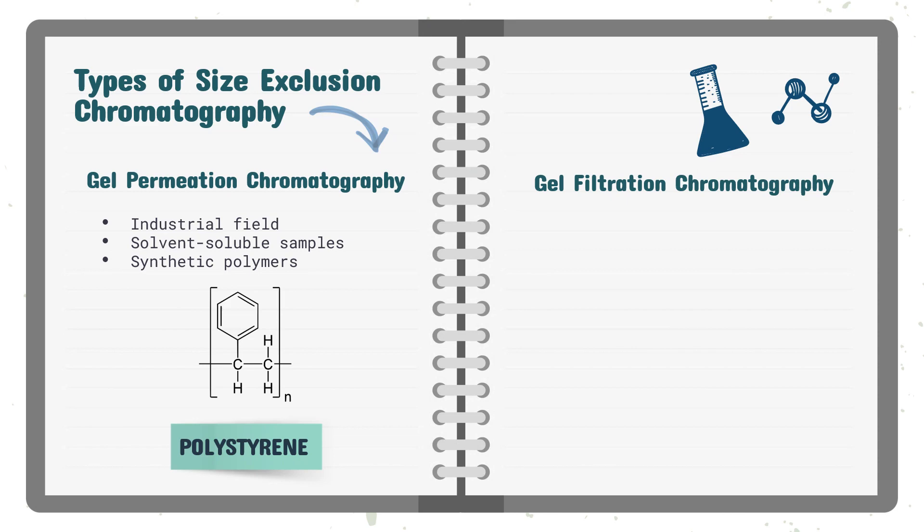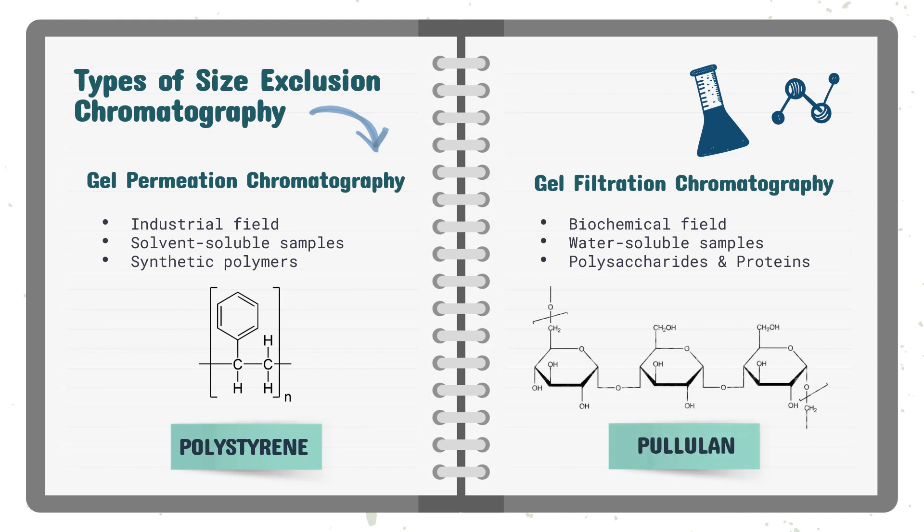The other is gel filtration chromatography, used in the biochemical field. It uses a hydrophilic column packing material and an aqueous mobile phase to separate and measure the molecular weight distribution of large water-soluble molecules such as polysaccharides and proteins. The standard used for calibration is polyethylene glycol.